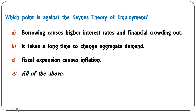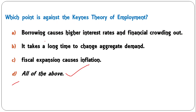Which point is against Keynes' theory of employment? Options: borrowing causes higher interest rates and financial crowding out; it takes long time to change aggregate demand; fiscal expansion causes inflation. All of these are against Keynes' theory and are in fact criticisms of Keynesian theory. So D — all of the above — is the correct answer.